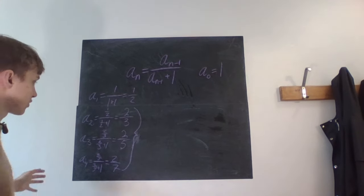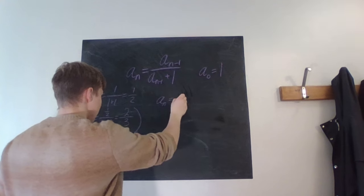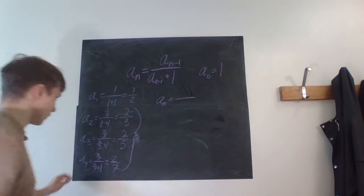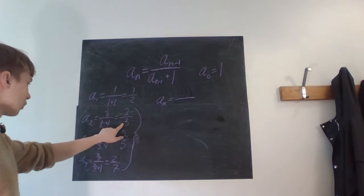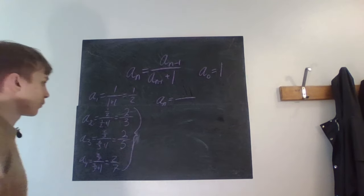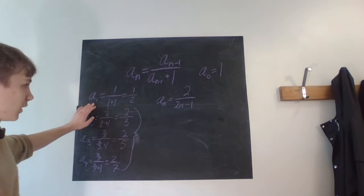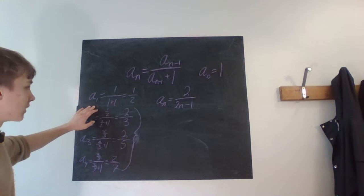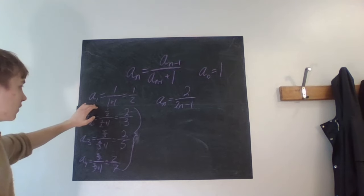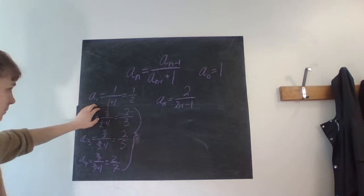So I am going to assume that a_n, our explicit formula for a_n, is two over 2n minus one. And does this work for one? Then we just get two instead. But we can have that as a special case.